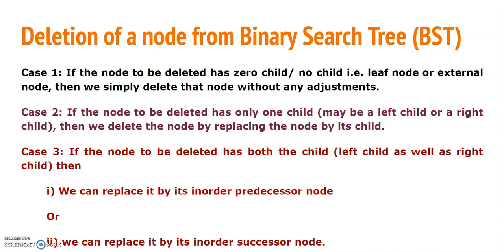In case 3, if the node to be deleted has both children present — that is, it has a left child as well as a right child — then we have two possibilities. We can replace the node to be deleted by its inorder predecessor node, or we can replace the node to be deleted by its inorder successor node. As we know, if you traverse any binary search tree in inorder fashion you always get the ascending order sequence of it.